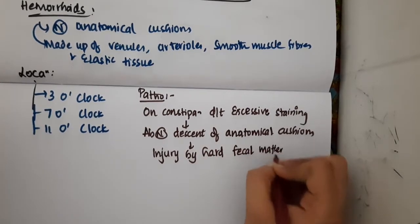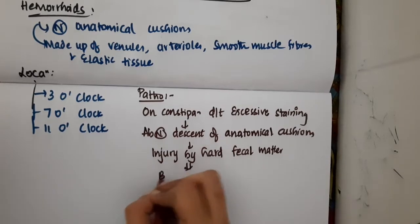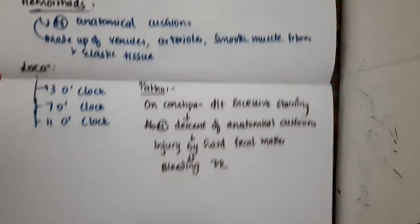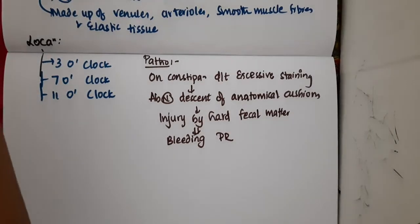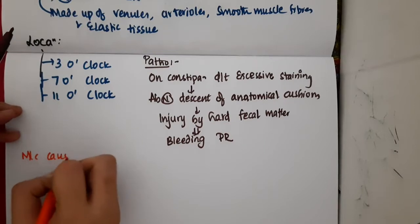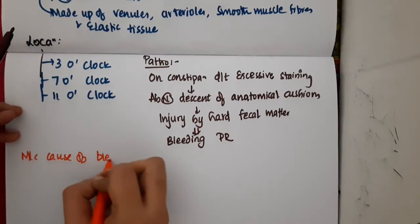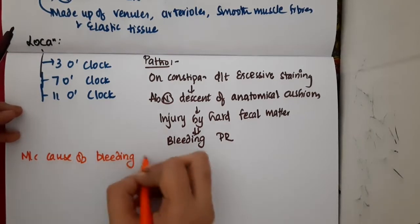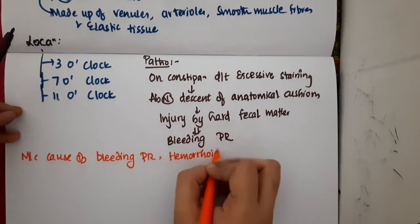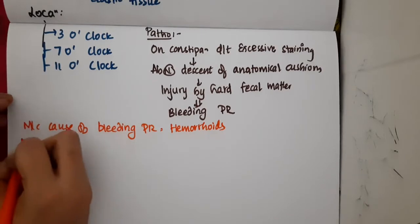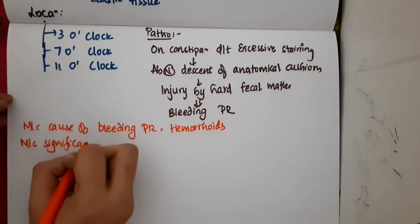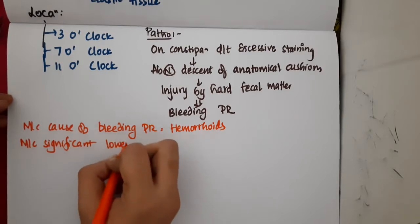This results in bleeding per rectum. The most common cause of bleeding per rectum is hemorrhoids. If asked about the most common significant lower GI bleeding, that would be colonic diverticula.